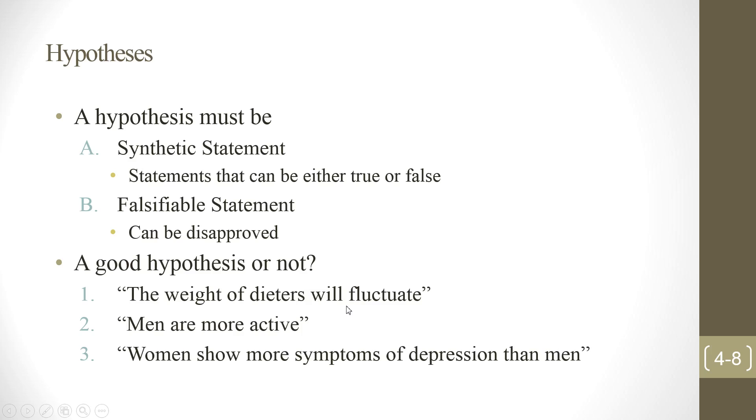Number three. Women show more symptoms of depression than men. Is that a good hypothesis? Pause the video, and then come back. Okay. Now, number three, it is a good hypothesis. Now, a good hypothesis, you mentioned, independent variable IV and the dependent variable DV. So, in this case, we are comparing gender differences. So, gender will be the IV. And DV will be the depression, symptoms of depression. And it's measurable. So, it's a good hypothesis.